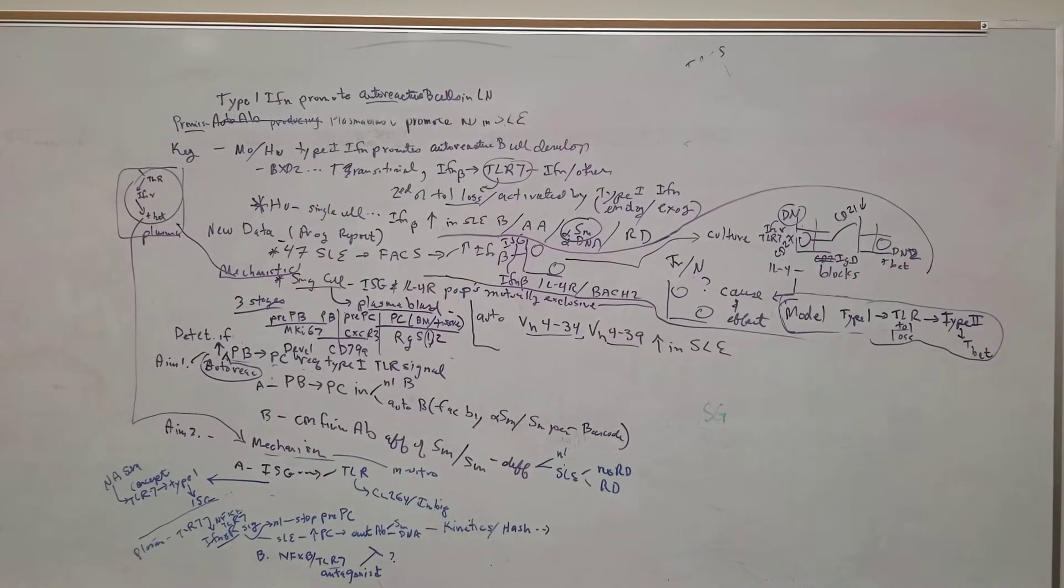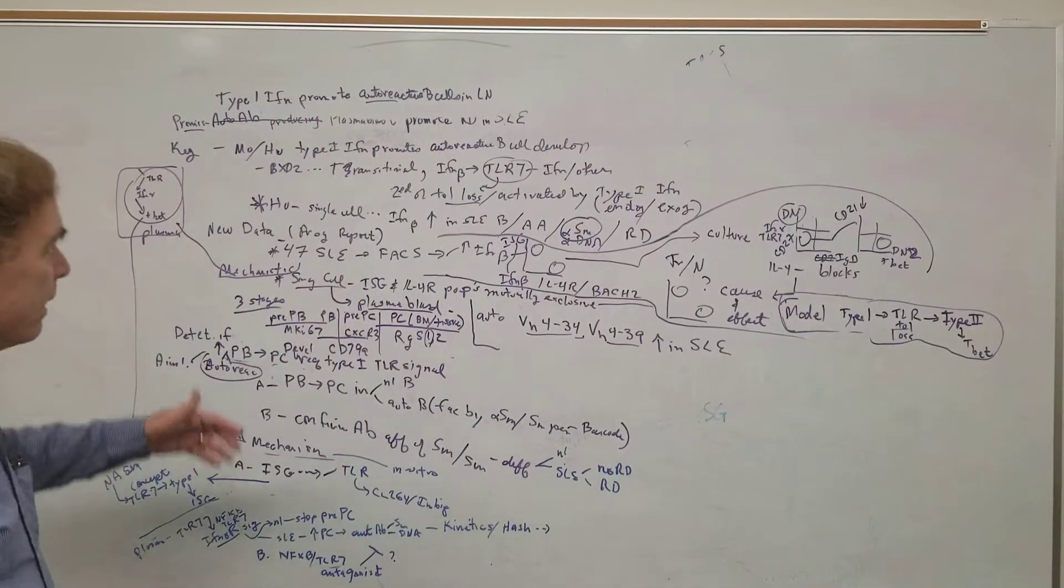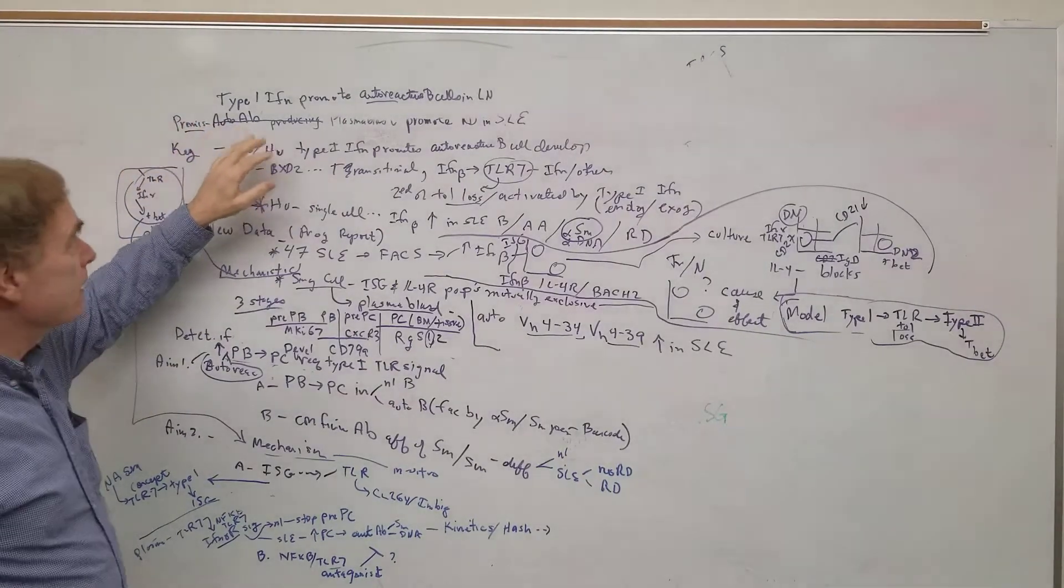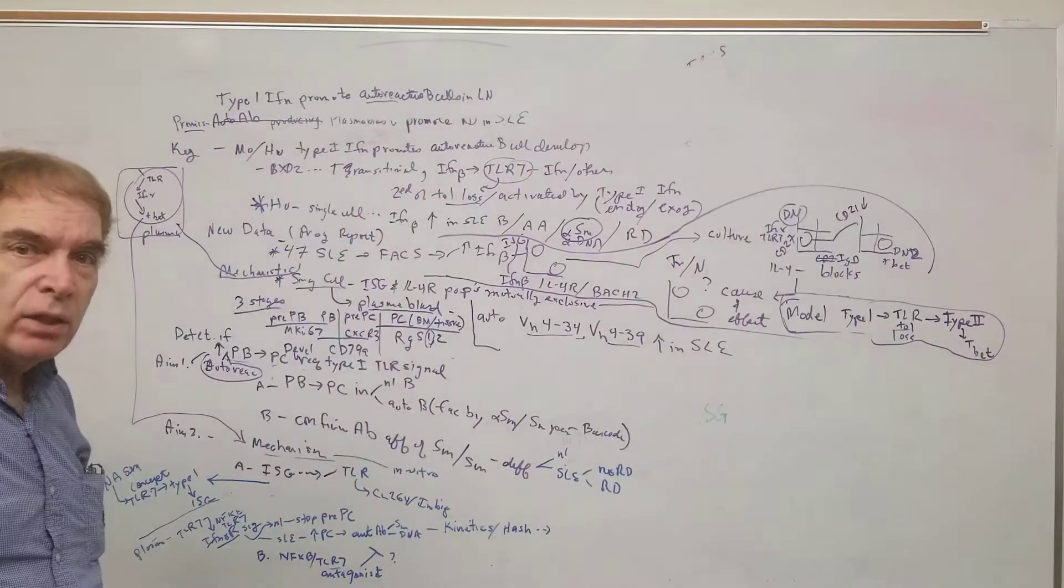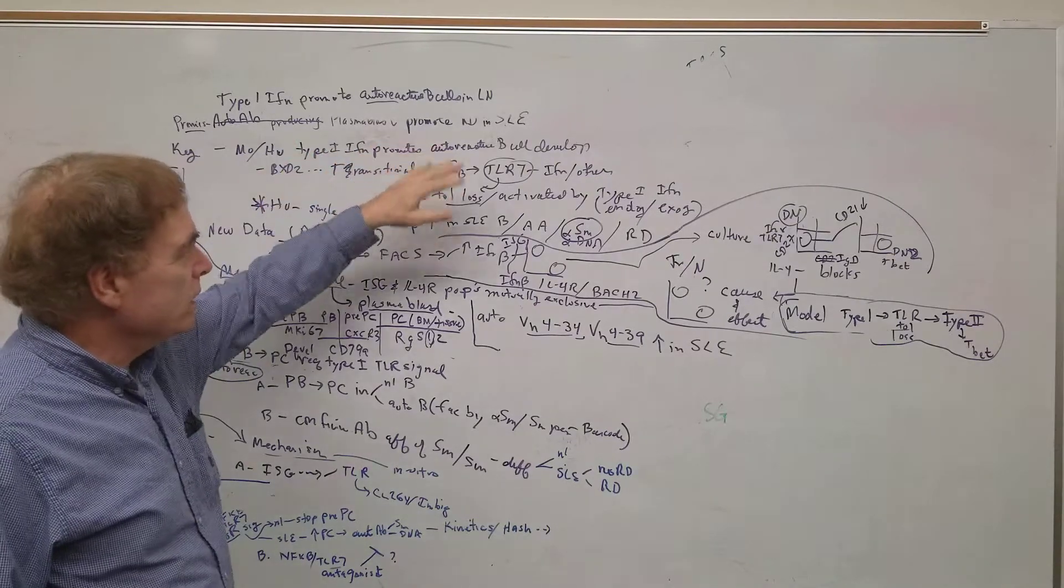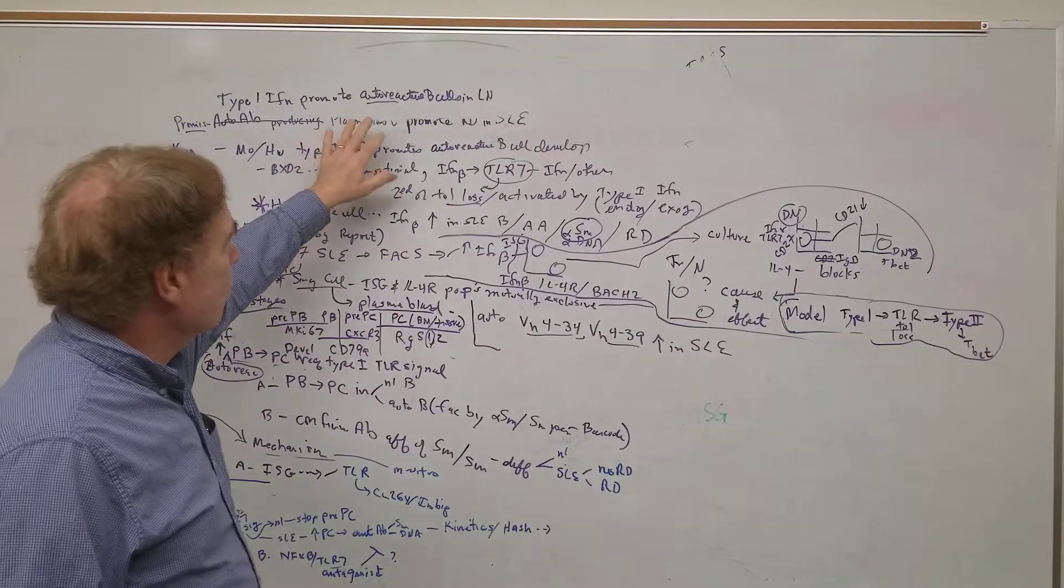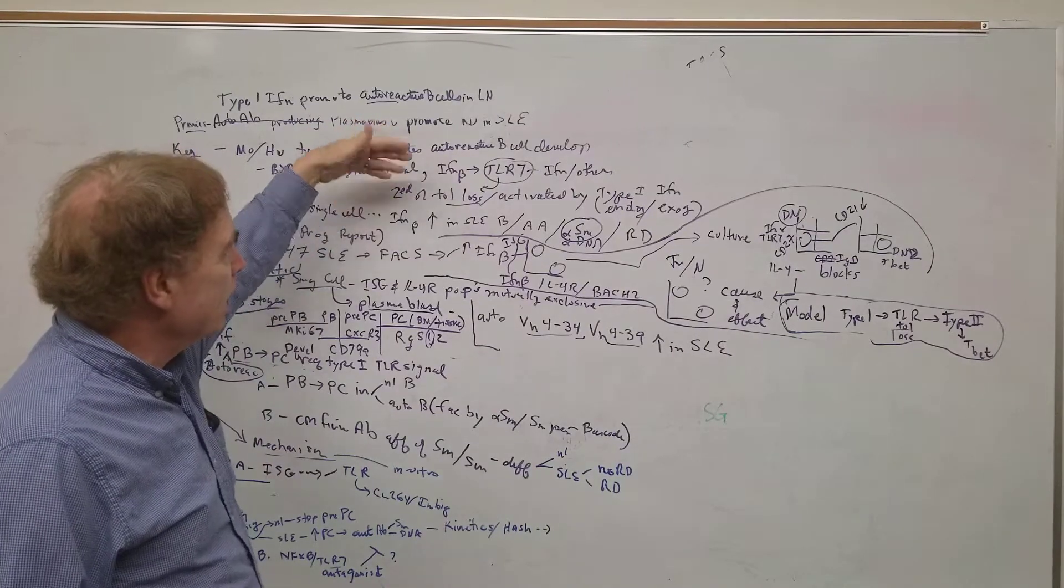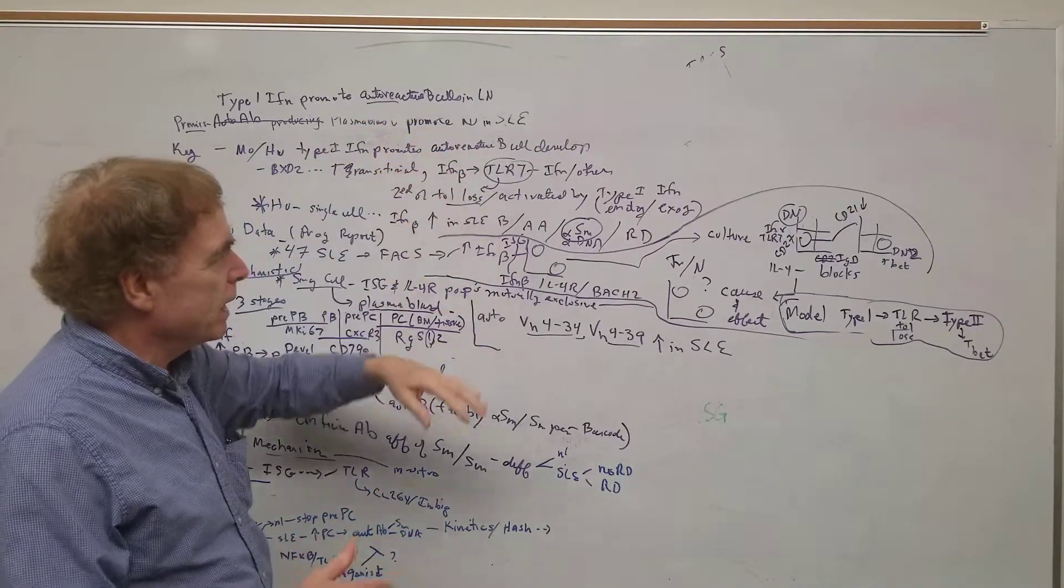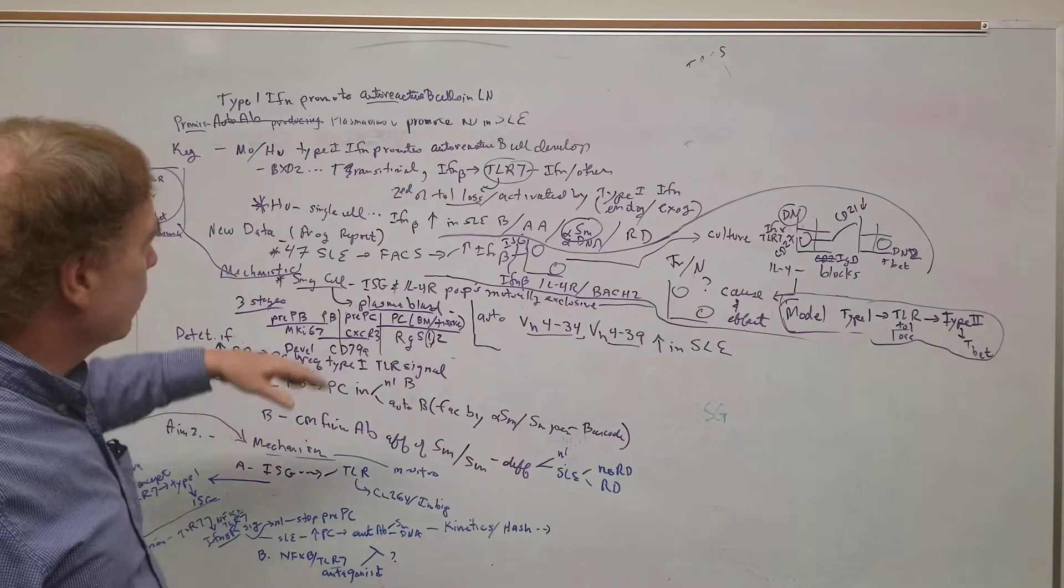All right, I think it's gone. Okay, so I want to go over the latest proposal, and I wrote a few things out here. This is going to be for the lupus group, and the idea is that type 1 interferon promotes autoreactive B cells in lupus nephritis.